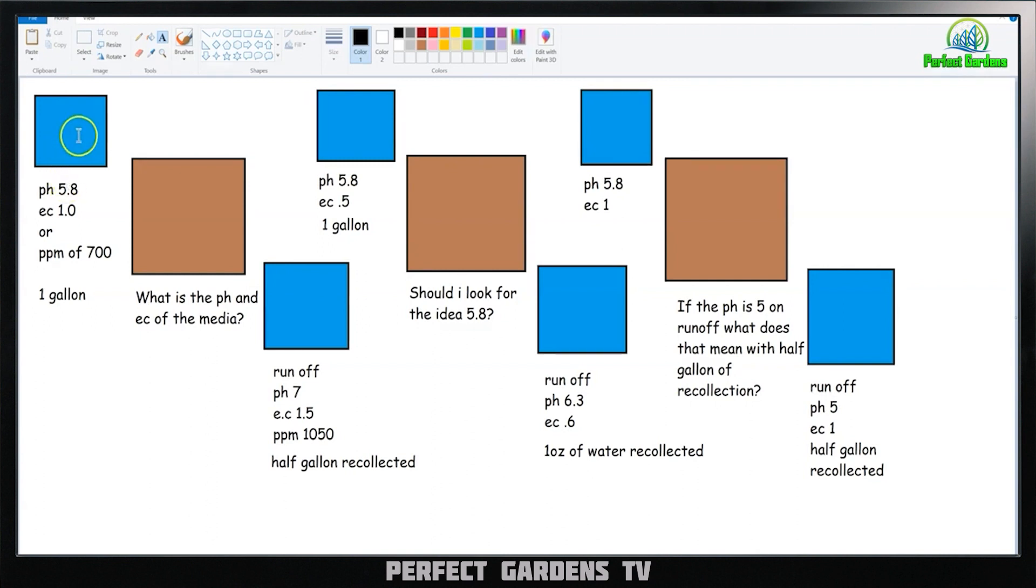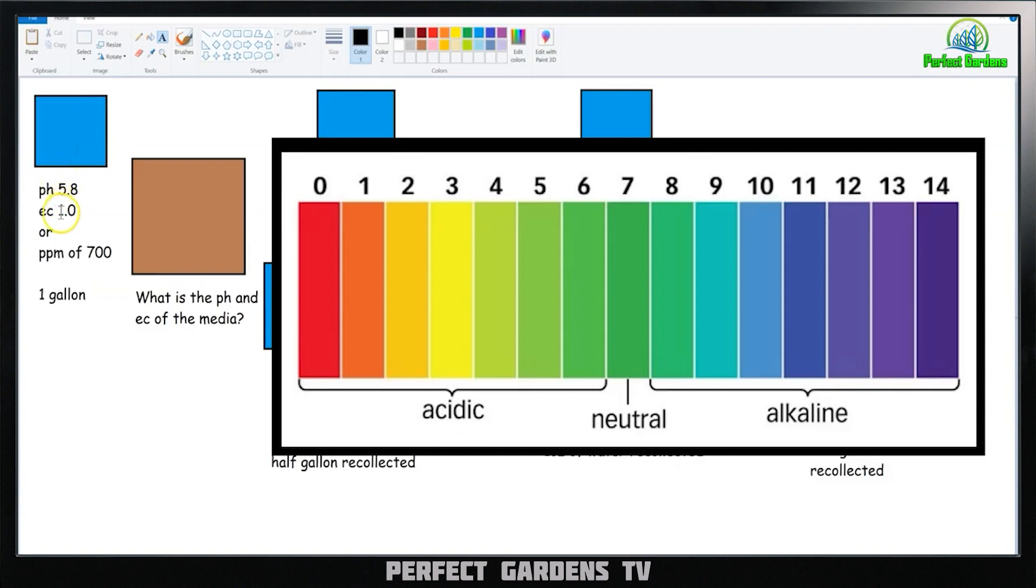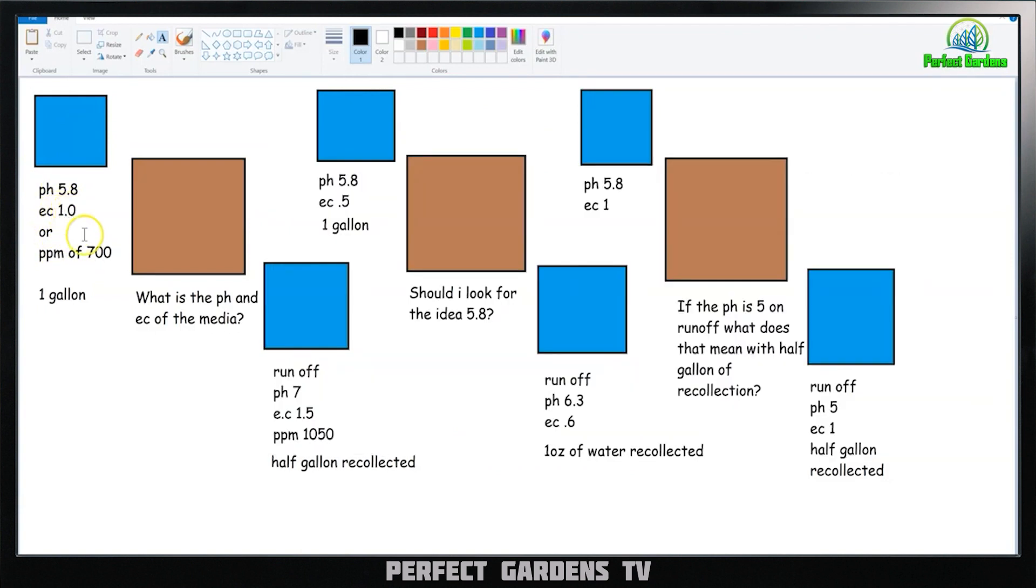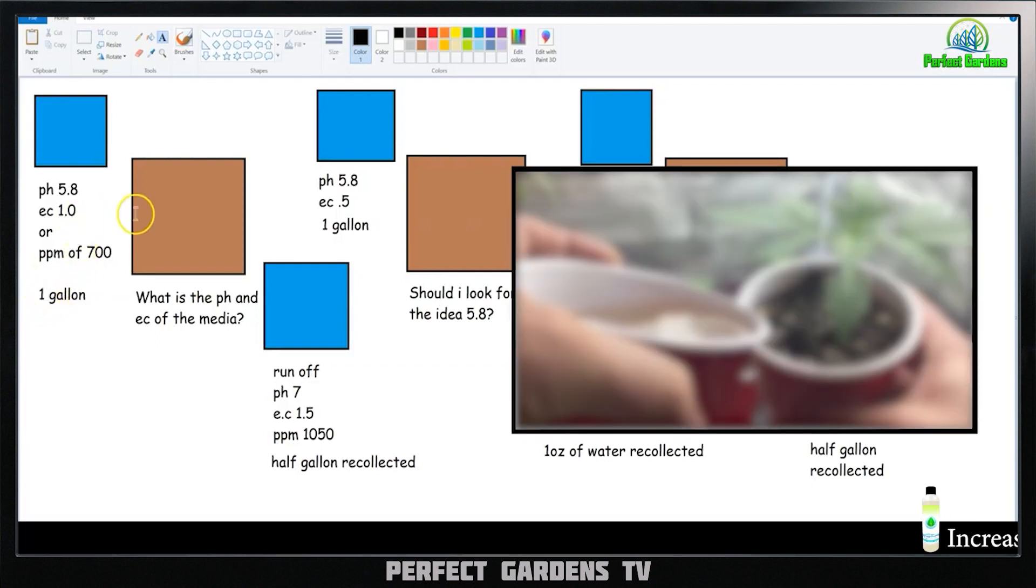Okay, so let's go ahead and dive into these scenarios. So you have your feed, you've already put in all your nutrients, and your pH is 5.8, your EC is 1, or your parts per million is 700. So an EC of 1 is a parts per million to 700 on a chart, and you are going to go ahead and feed your plant 1 gallon of nutrient feed.